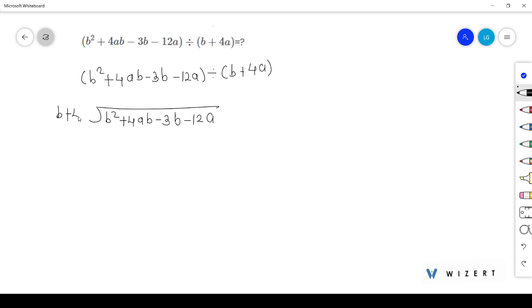Now multiply this b by b + 4a. So b into b is b². Again, b into 4a is 4ab.